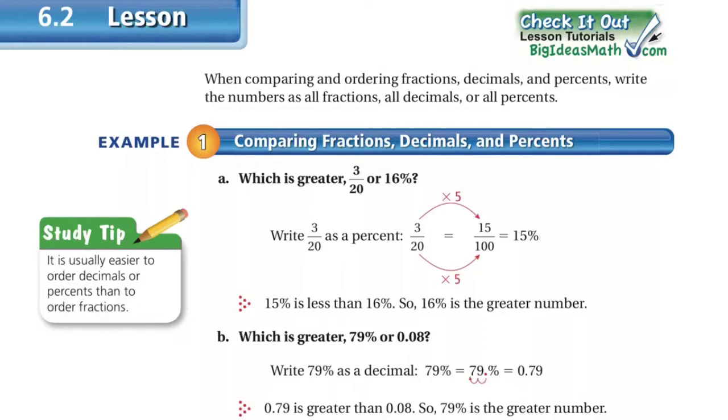Let's look at example 1A. Which is greater, 3/20 or 16%? They turn them both into percentages, and they have 15% is less than 16%. So once they turned them into percentages, it's pretty easy to see which one was greater.